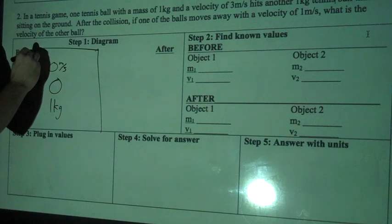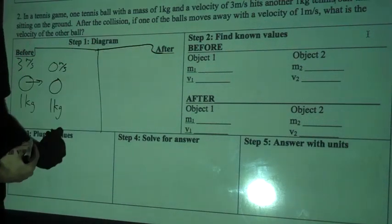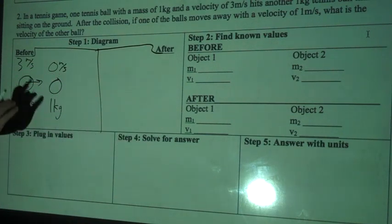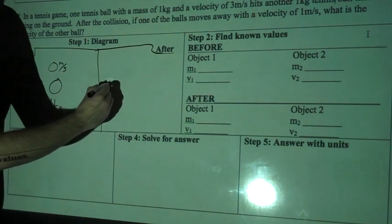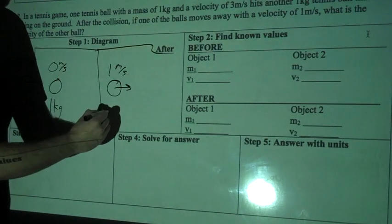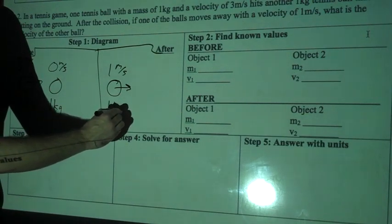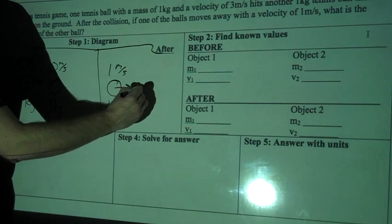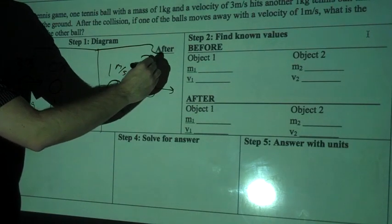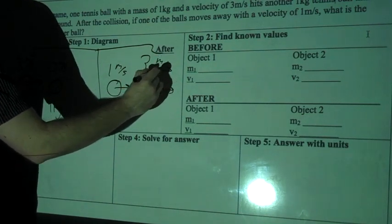Now the after part of my diagram: after the collision, if one of the balls moves away with a velocity of one meter per second, what is the velocity of the other ball? So one of them we know is moving with a velocity of one meter per second, and its mass must be the same — one kilogram. The other one, we don't know how fast it's moving — question mark meters per second.